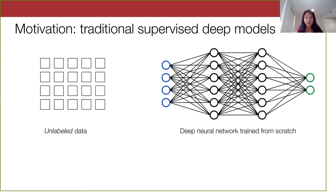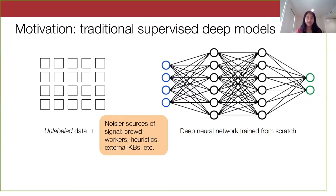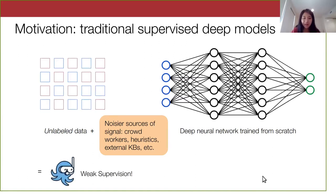On the data side, suppose we start with an unlabeled dataset. We can do things like active learning or semi-supervised learning, like few-shot learning, where we just ask the user to input a few labeled samples and the algorithm takes care of the rest. Another angle is to take advantage of noisier sources of supervision that are lying around cheaply — things like crowd workers, user-specified heuristics, knowledge bases. That's exactly where Snorkel and weak supervision come in: figuring out how to programmatically label datasets using noisy sources.